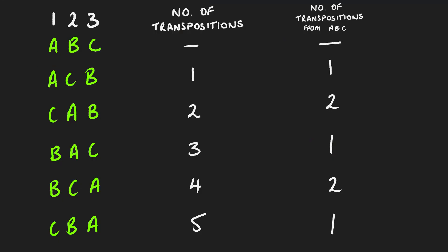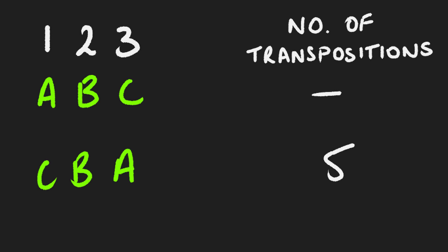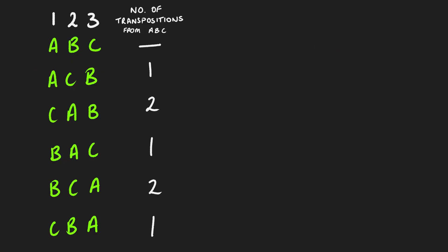For instance, to get to C, B, A from A, B, C we said it's five transpositions, but it can also be done in one transposition because we could just swap A and C. But it will always be odd — it can't be two or four transpositions because we won't end up with the same thing. So looking at the minimum transpositions needed: A, C, B is one; C, A, B is two; B, A, C is one; B, C, A is two; and C, B, A is one.